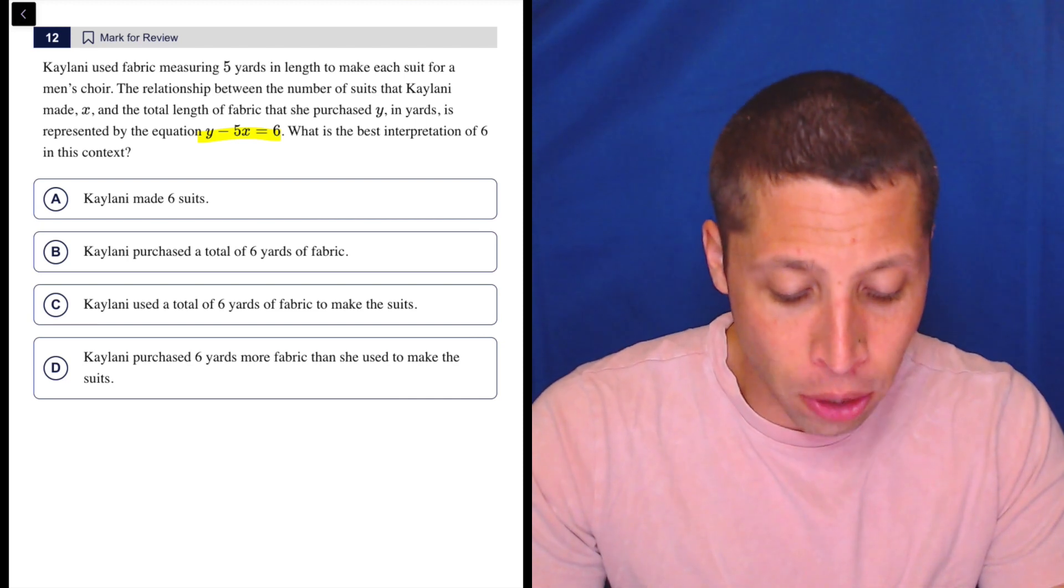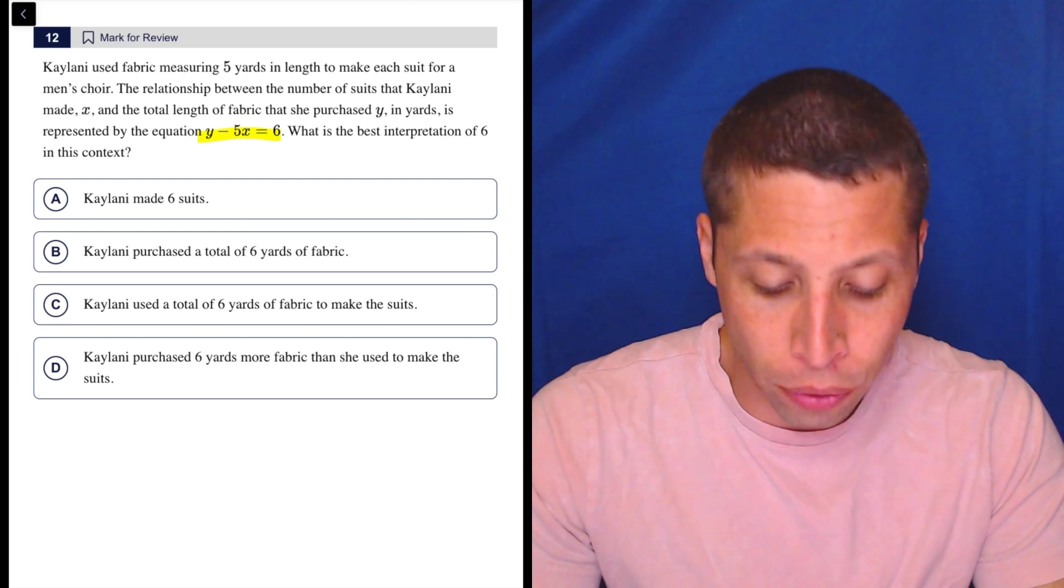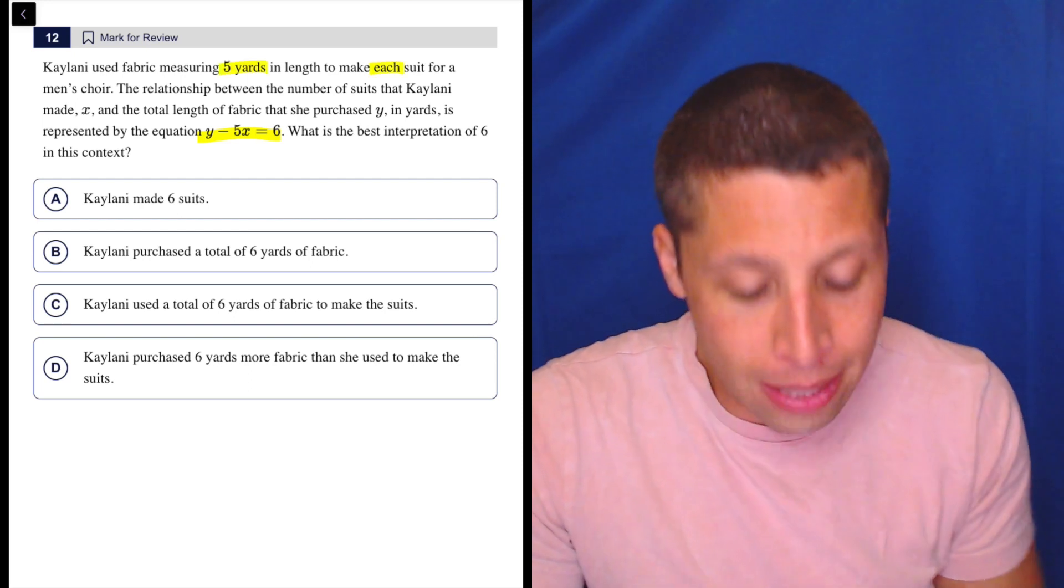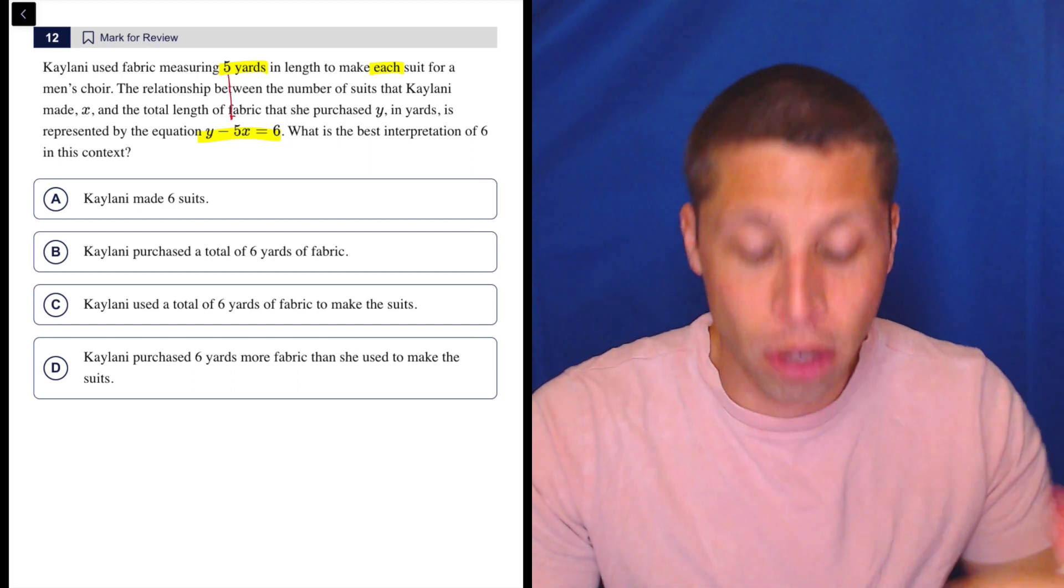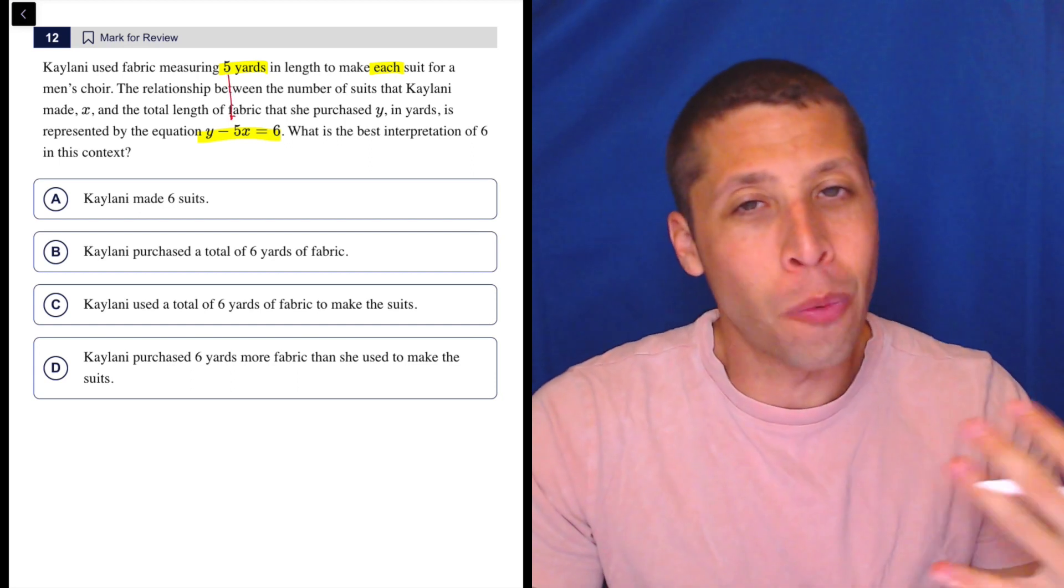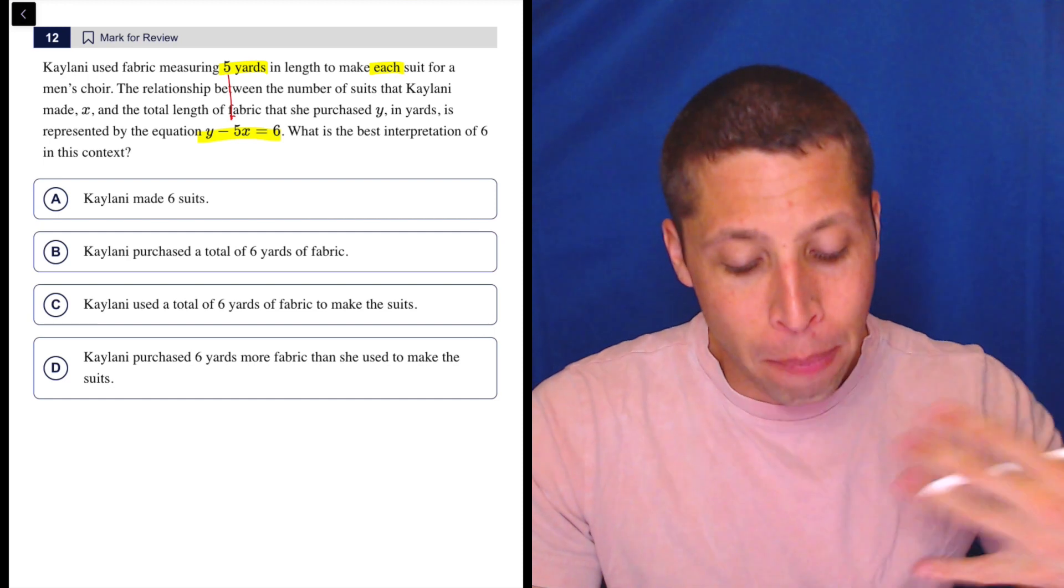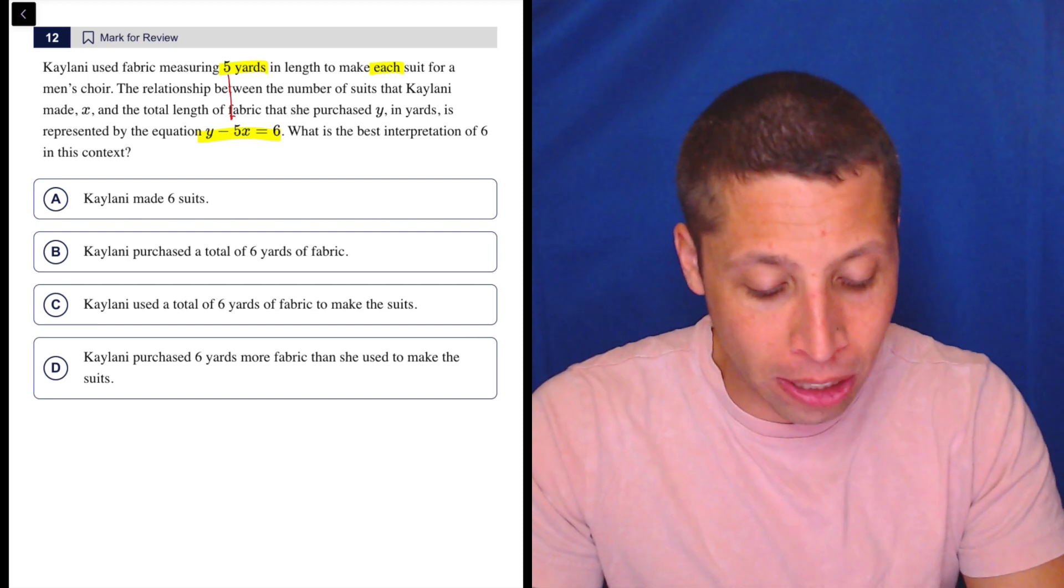Kalani uses fabric measuring five yards in length to make each suit for men's choir. So already this seems to have the language of a slope and unsurprisingly that's exactly what it looks like. It's attached to my x. I know this isn't written in y equals mx plus b format but it has that vibe, it's very similar.